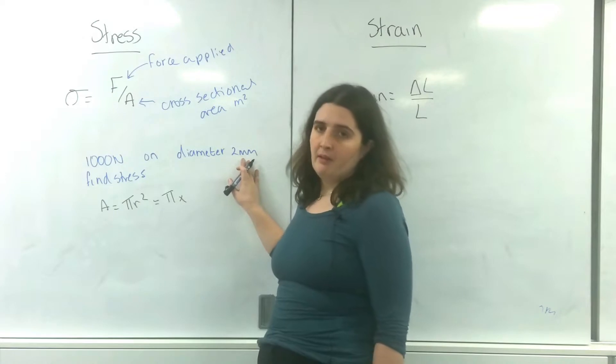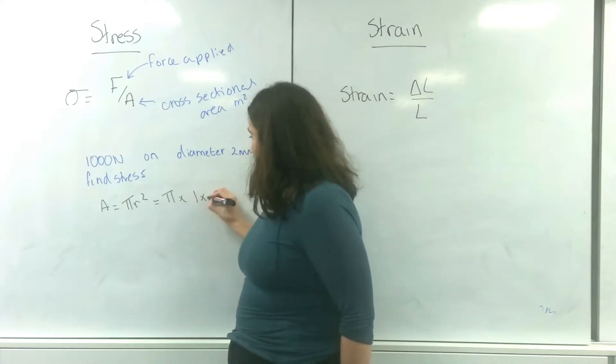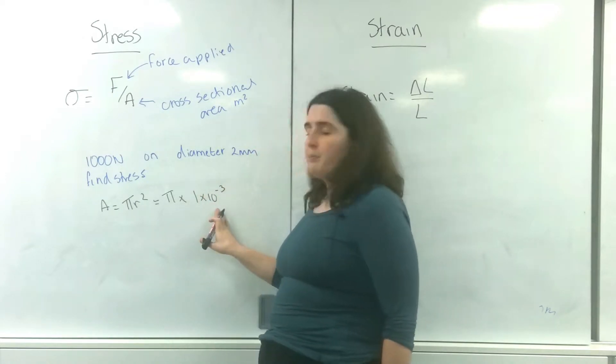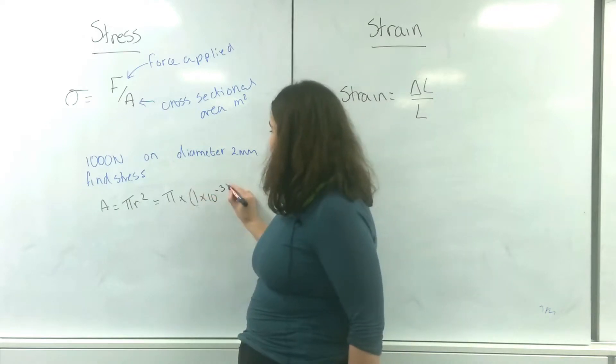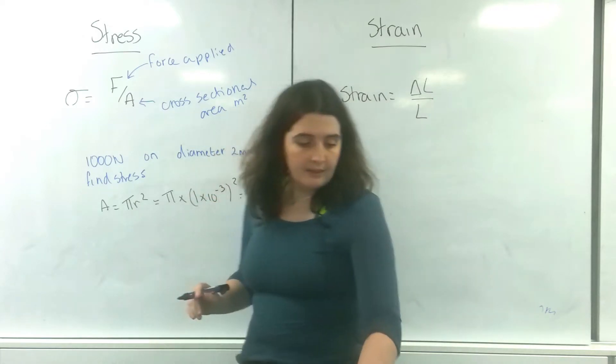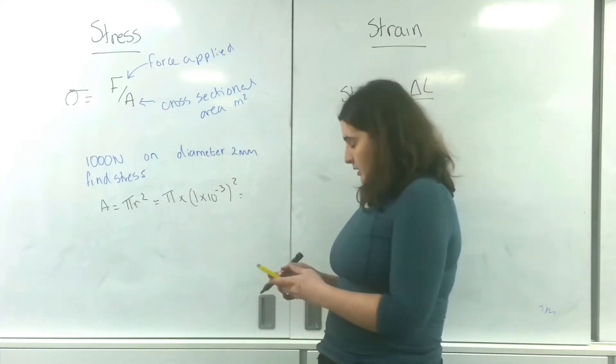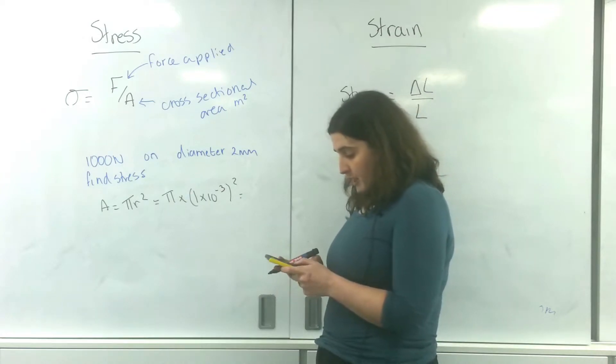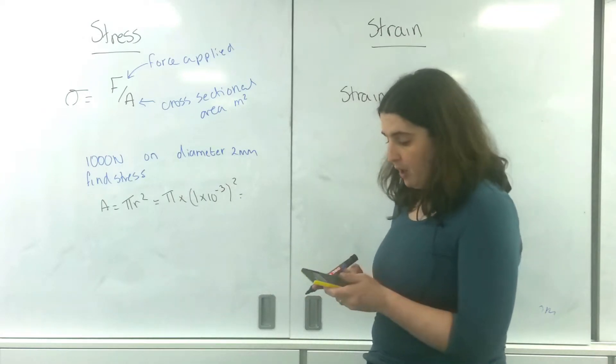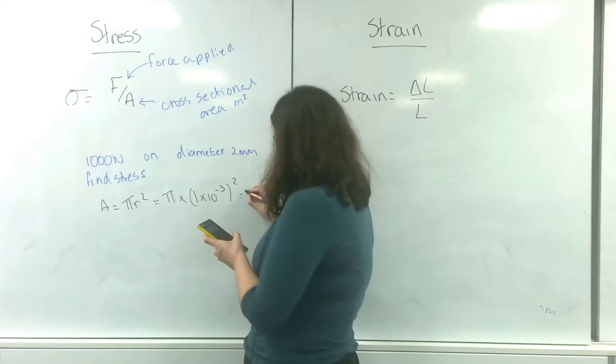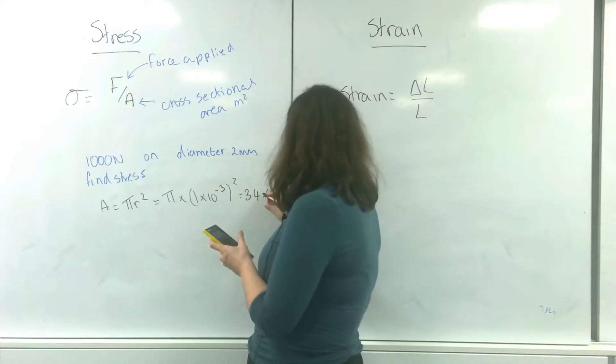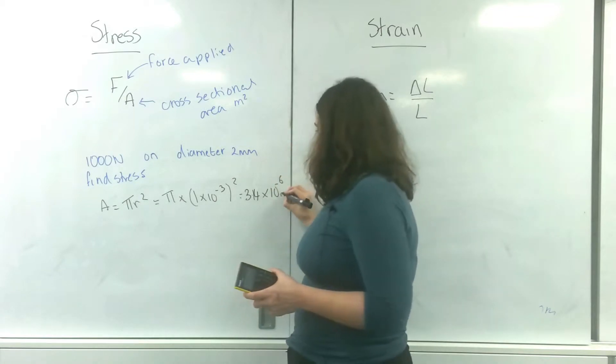Which is one millimeter, and then I need to convert that into meters, which is times ten to the minus three squared. So one times ten to the minus three squared times pi equals 3.14 times ten to the minus six meters squared.